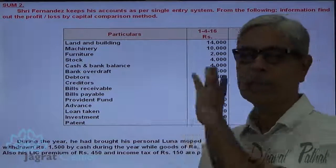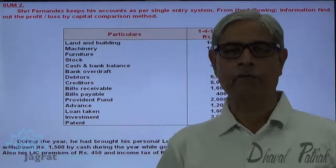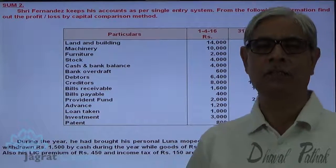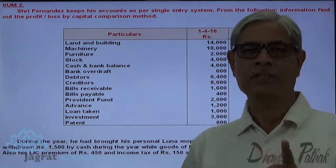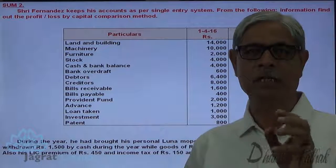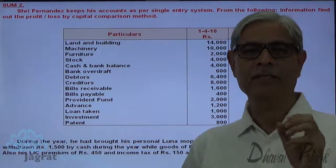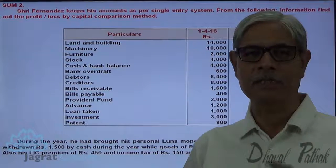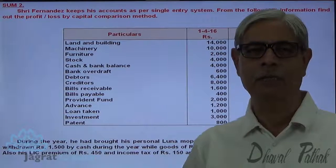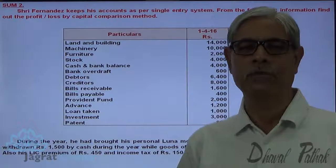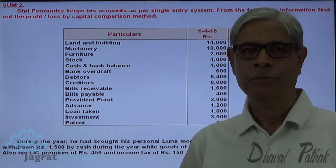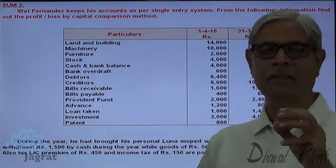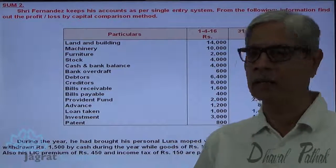Taking into consideration these aspects, we are required to find out the profit. Notice that we are not given cash transactions, credit transactions, bank transaction details, expenses, income, sales, or purchases. All these details are not available, and even then we are required to find out the profit — by this method, also known as the net worth method.